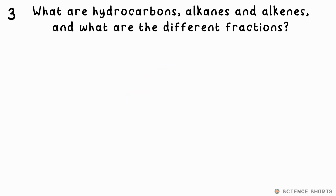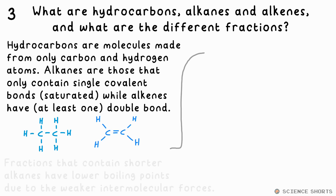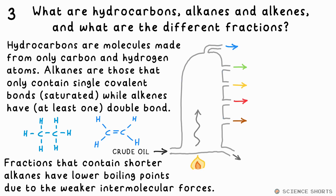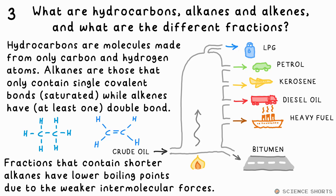What are hydrocarbons, alkanes and alkenes, and what are the different fractions made from fractional distillation of crude oil? Hydrocarbons are organic molecules that only contain carbon and hydrogen atoms. Alkanes are hydrocarbons that only have single covalent bonds between carbon atoms; alkenes have a double covalent bond between carbon atoms — the way to remember it is that alkene has a double E, so that's a double bond. Crude oil is a mixture of different length alkanes; it's heated at the bottom of the fractionating column, vaporized into gas, and rises up the column, then recondenses back into liquid at different heights as it gets colder up the column. Shorter chains like LPG or refinery gases come out of the top because shorter chains have lower boiling points due to the weaker intermolecular forces between them.